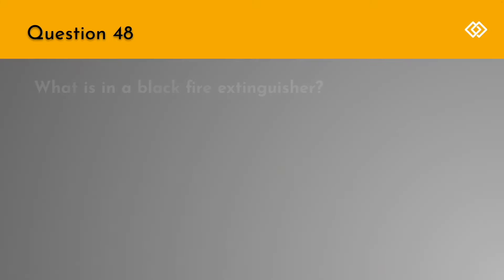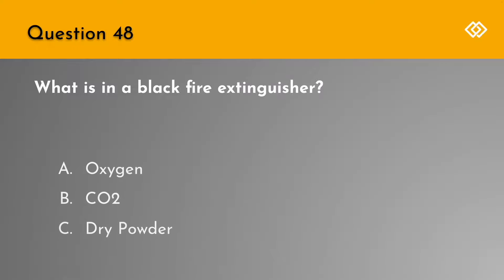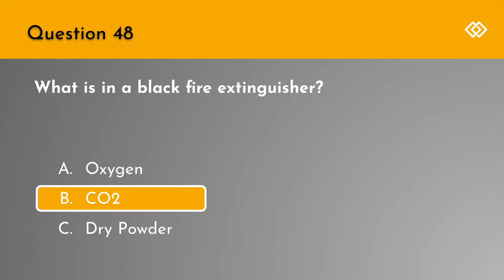Question 48. What is in a black fire extinguisher? A. Oxygen. B. CO2. Or C. Dry powder. The correct answer is B. CO2.